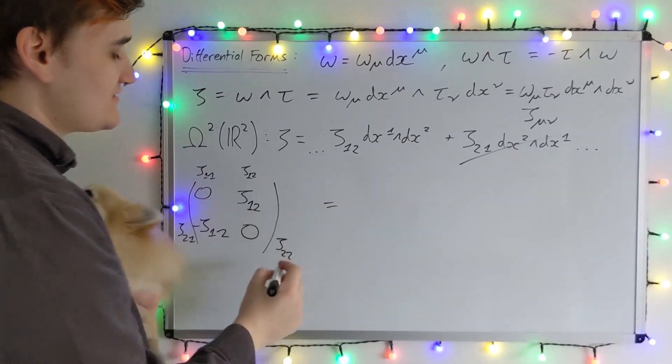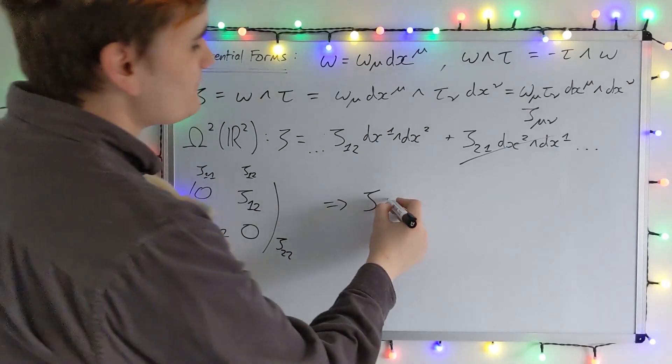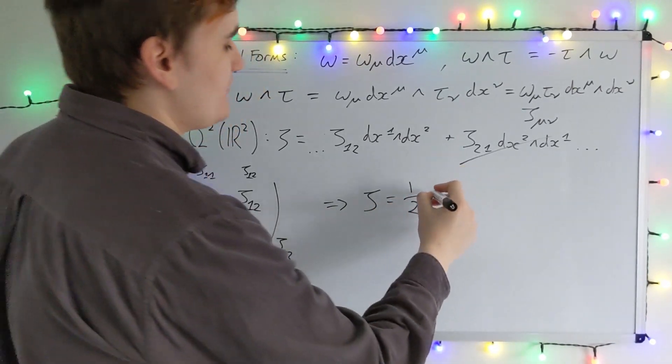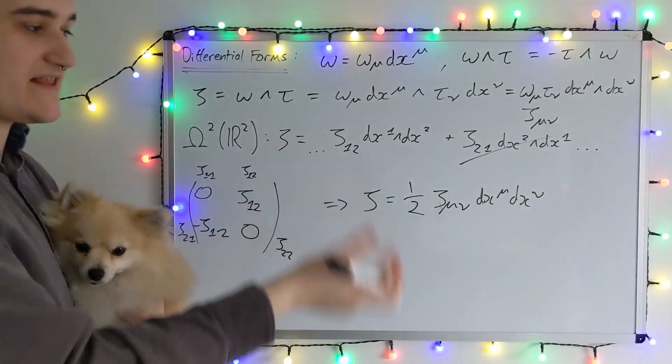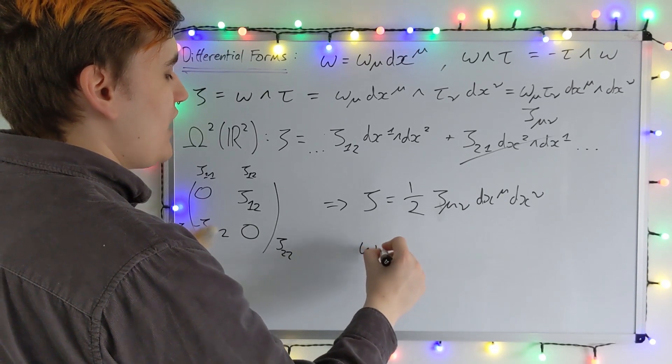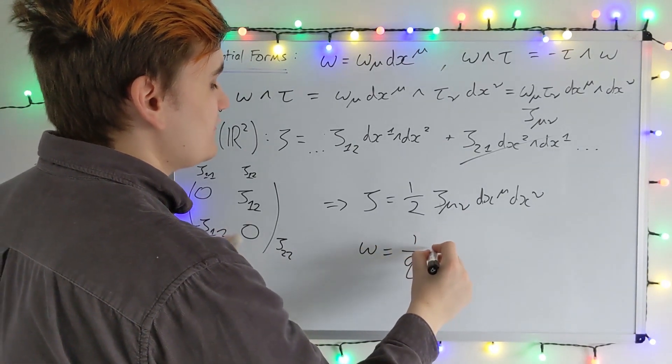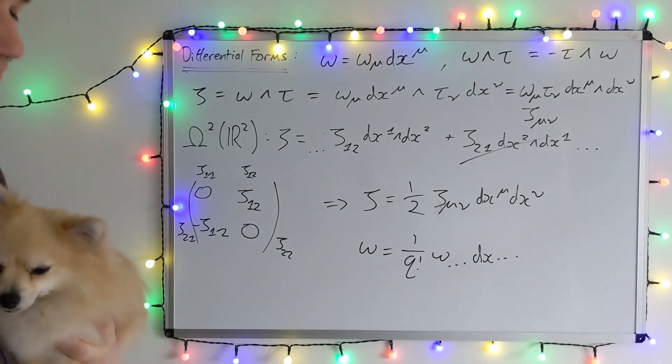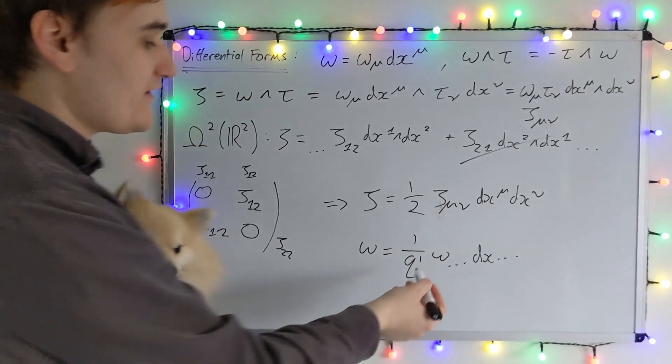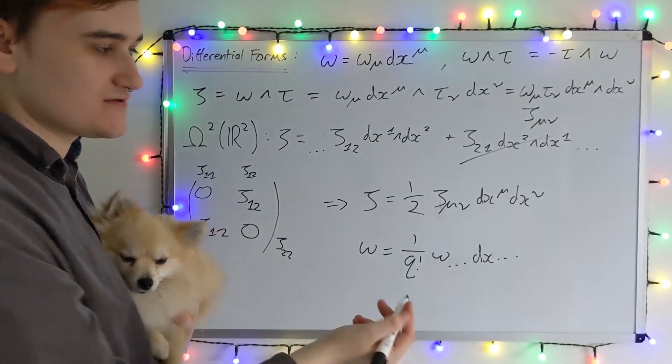So what I should really write, is that zeta, now as a 2 form, is equal to 1 half times, so that would be for a 2 form. For an arbitrary degree form, I would have an expression, something like this. Okay, so we'll probably come back to this, but we just need an extra factor of q factorial to deal with this over-counting that's happening due to the sum convention.